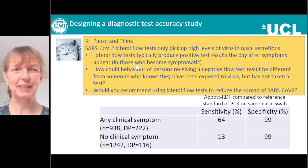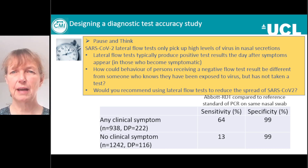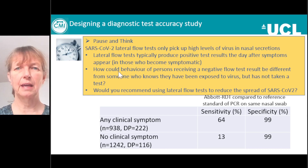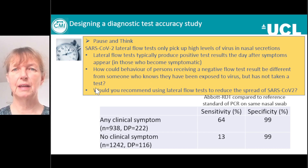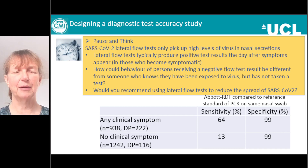Here's another pause-and-think exercise. Lateral flow tests only pick up people with high levels of virus in their nasal secretions, and they typically only produce positive results on the day after symptoms appear in those who become symptomatic. How could the behaviour of people receiving a negative lateral flow test result differ from someone who knows they've been exposed to virus but hasn't taken a test? And what would you recommend using lateral flow tests for to reduce the spread of SARS-CoV-2?